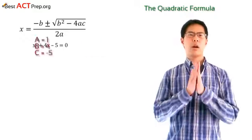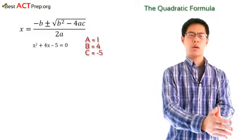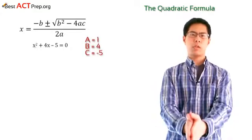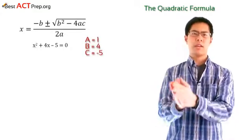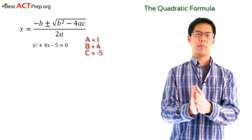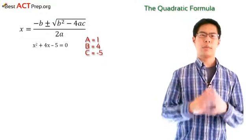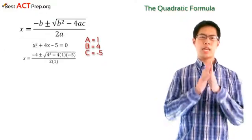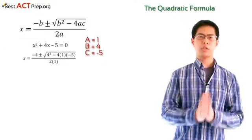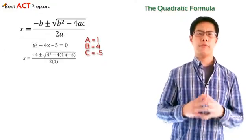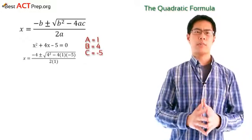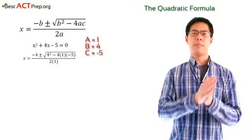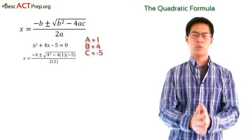For the quadratic formula, our a is going to be 1, our b is going to be 4, and our c will be negative 5. Now, plugging these numbers into the quadratic formula, we get negative 4 plus or minus the square root of 4 squared minus 4 times 1 times negative 5, divided by 2 times 1.